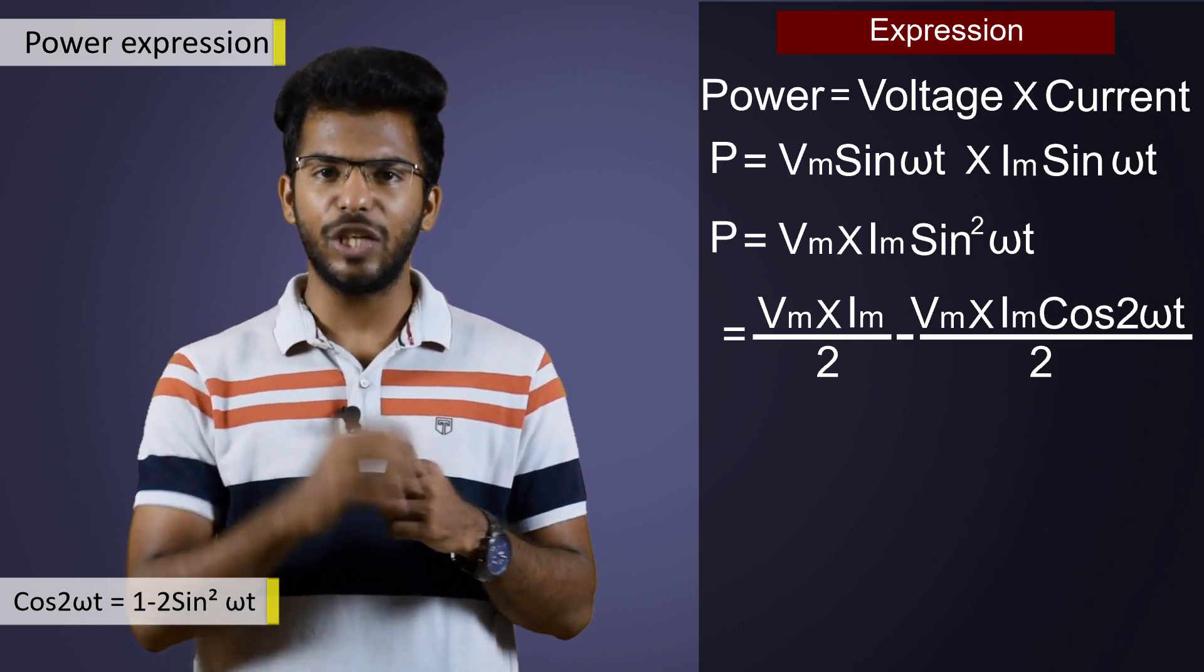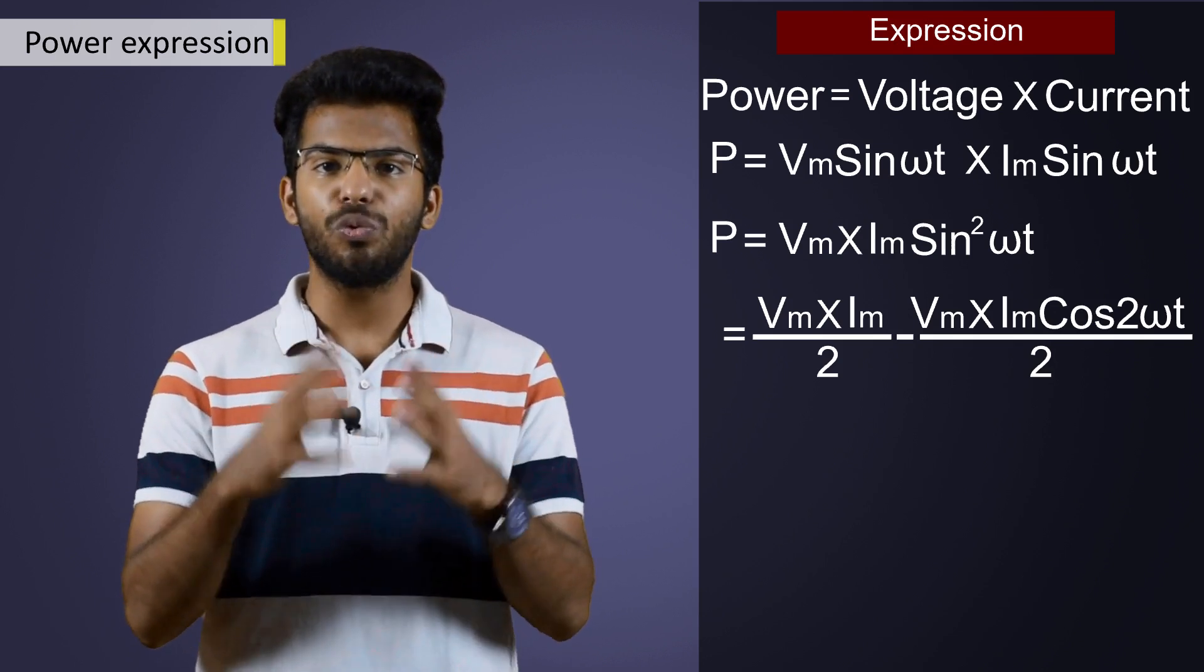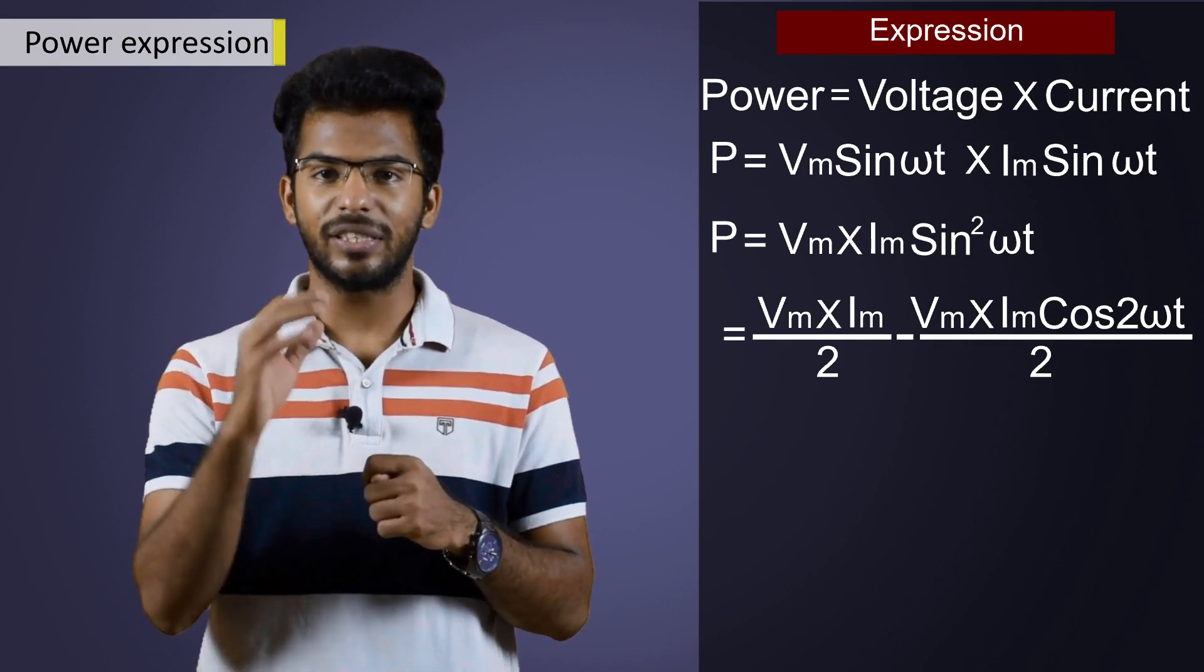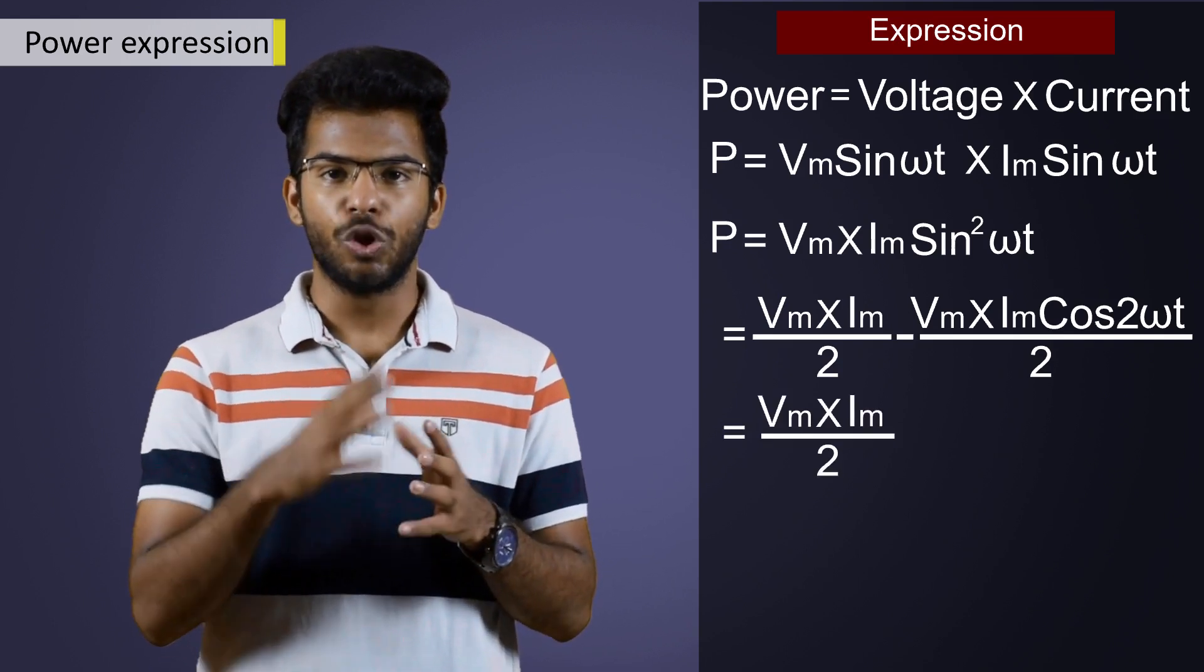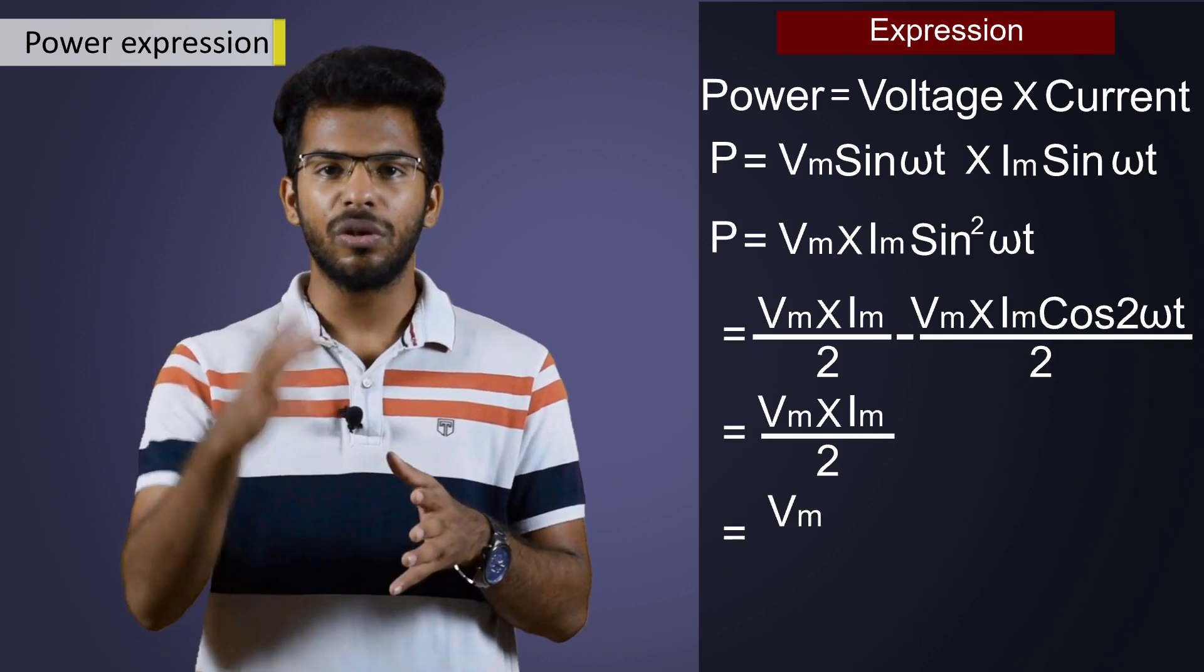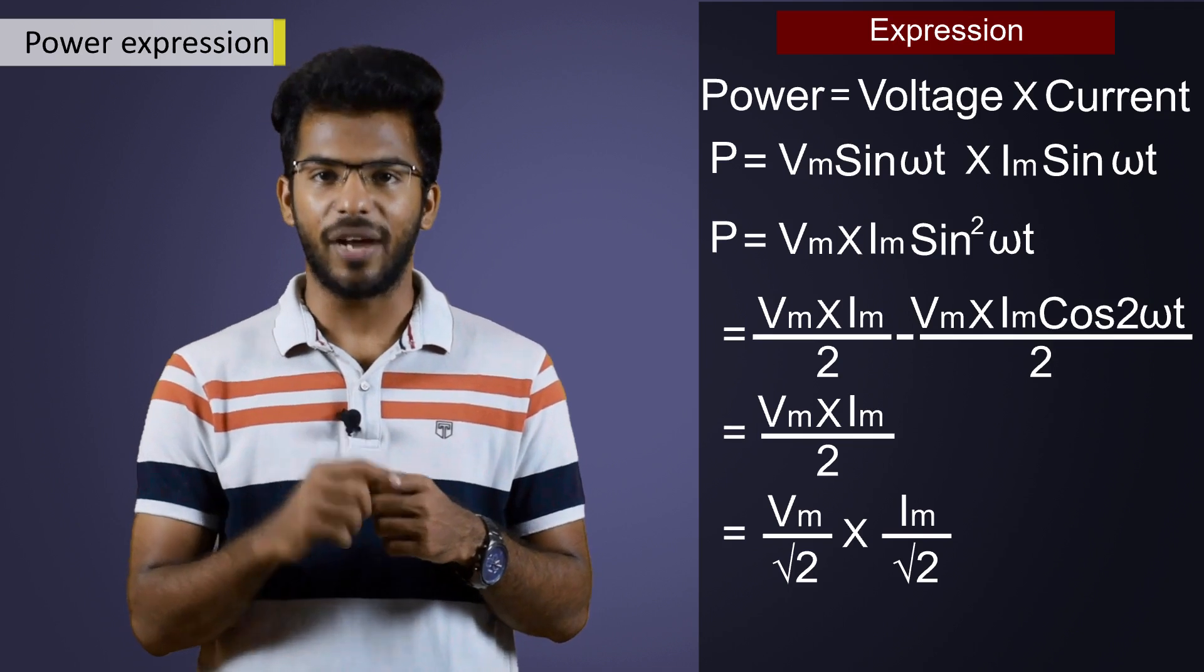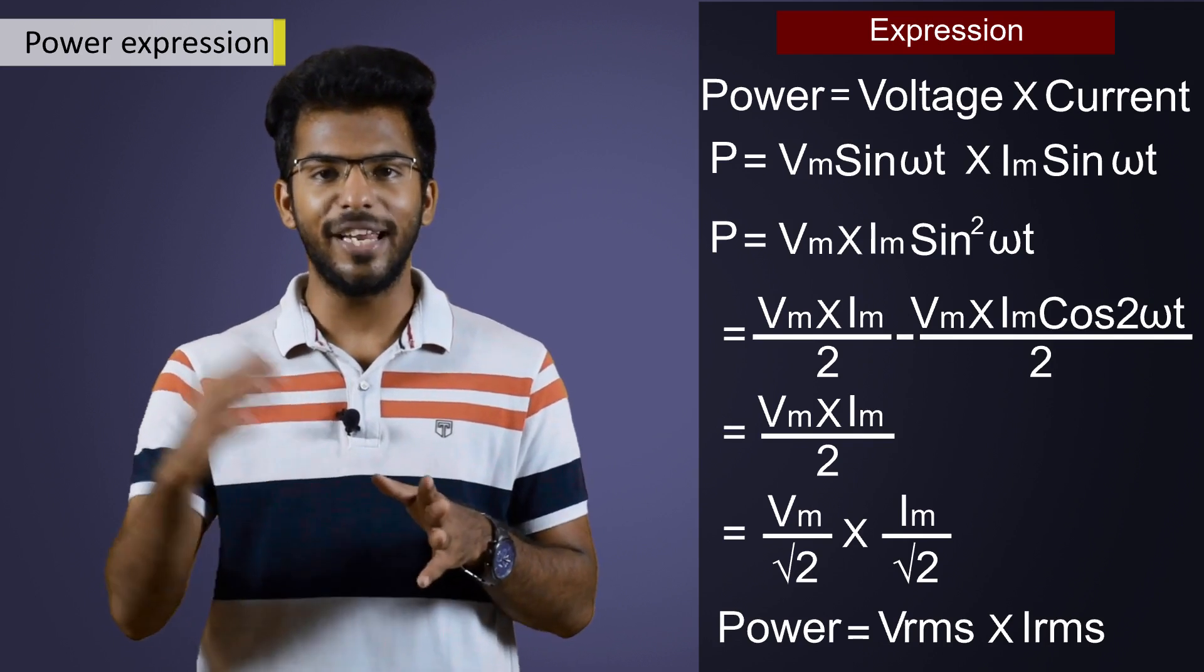If we consider the average power over one complete cycle, cos 2 omega t value will be zero because the positive values in the first half of the wave cancel out the negative values in the second half. So, we are left with power expression which is equal to P is equal to Vm Im divided by 2. 2 can be written as root 2 into root 2. The value does not change. So, P is equal to Vm by root 2 into Im by root 2. These values are nothing but the RMS values of voltage and current. Finally, we have power which is equal to VRMS into IRMS or V into I watts.